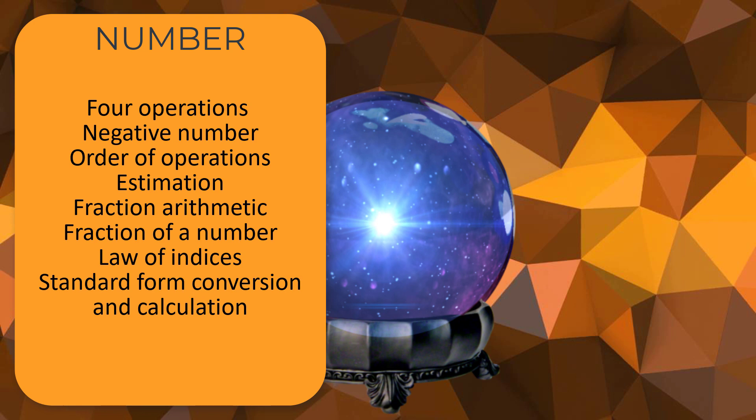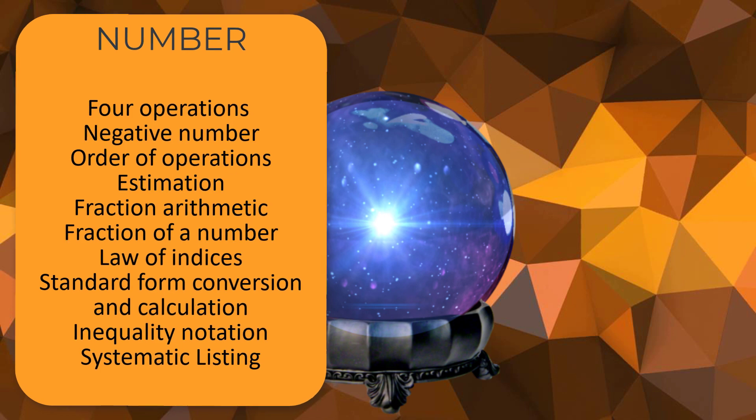Standard form conversion and calculation. So taking a larger or small number and rewriting it in standard form and then being able to do some calculations on those numbers. So if you've got two numbers in standard form, can you multiply them together? Can you divide them? Can you add them? Okay. Inequality notation. So if I give you two values, can you put the right inequality sign between them? And systematic listing. So if I had two dice, a red dice and a green dice, could you list all the different outcomes in a systematic way so you didn't miss any out? So they tend to be that you have to avoid missing one - that's why you get marked down - and not repeating yourself.